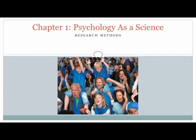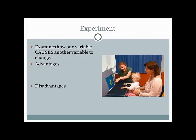An experiment is considered the gold standard of research because it's the only way that we can examine how one variable causes another variable to change. We talked briefly before about independent and dependent variables — you manipulate the independent variable in order to see if there's a change in the dependent variable. The reason we can make cause and effect arguments with an experiment is we use tight experimental control. This is the only legitimate way to make cause and effect arguments, and that's the chief advantage of doing an experiment.